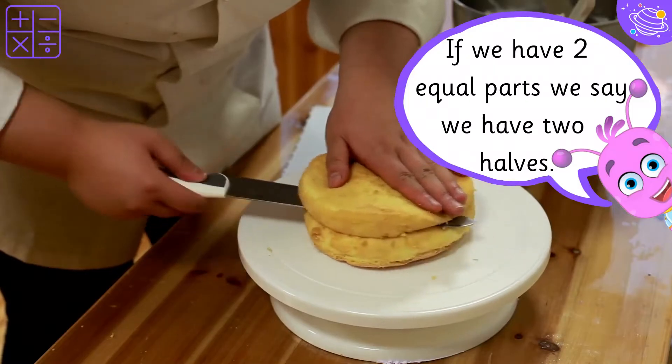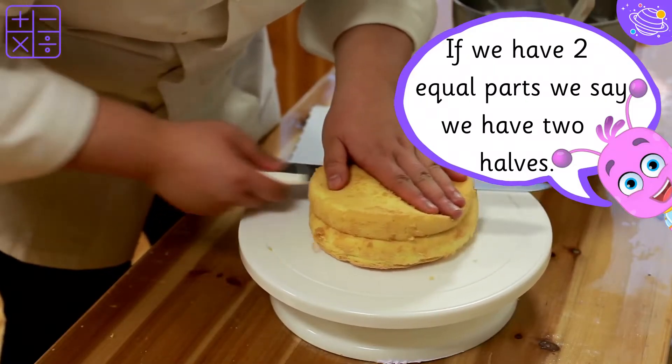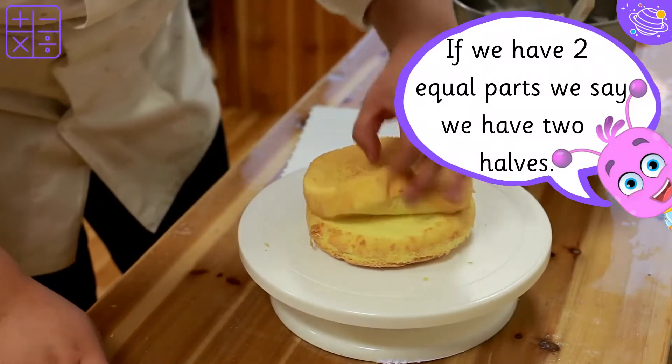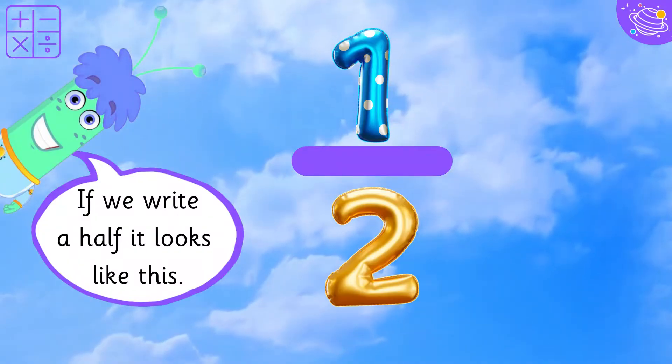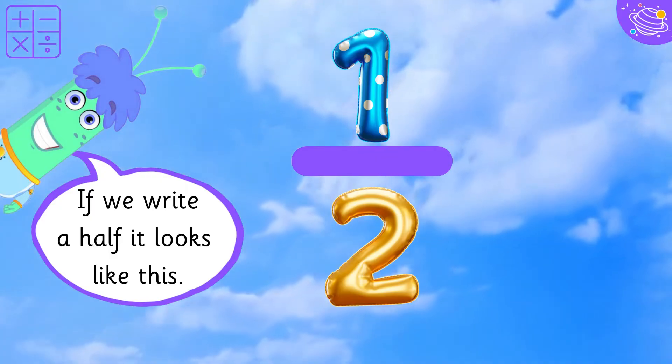If we have two equal parts, we say we have two halves. If we write a half, it looks like this.